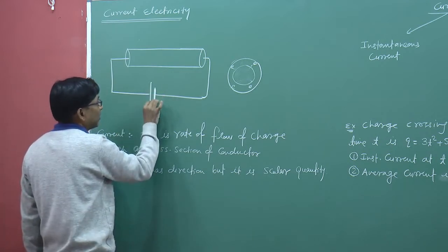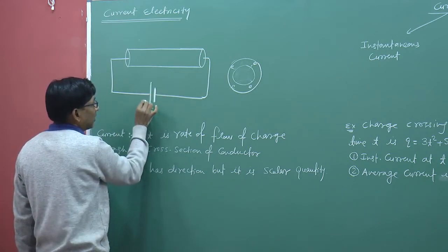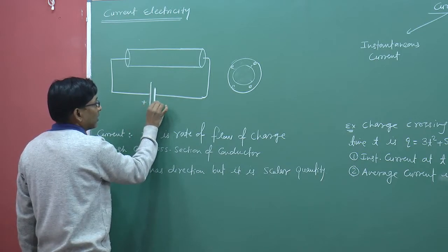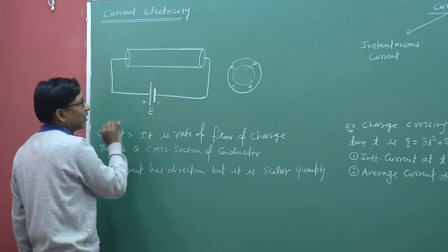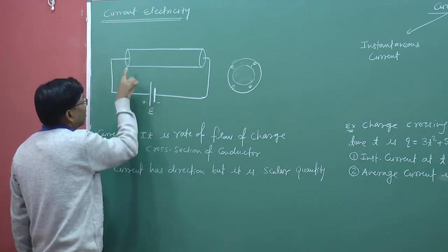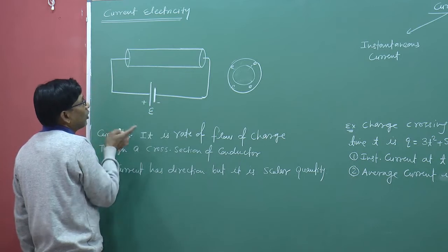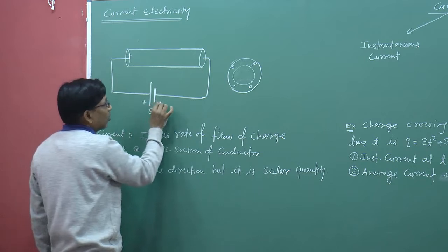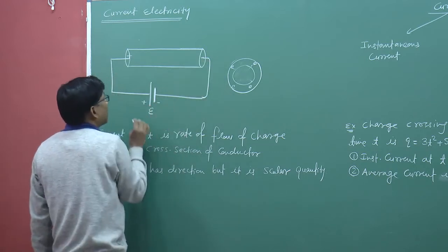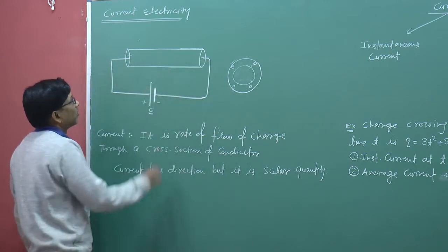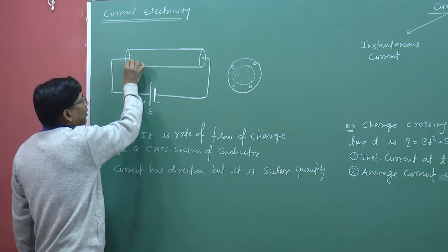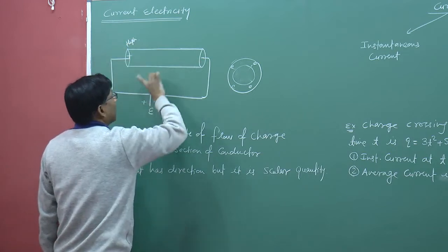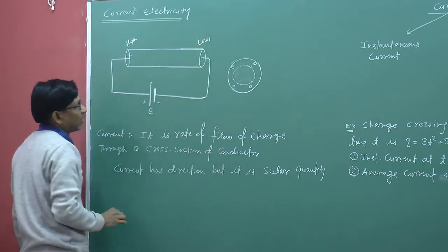We will create a potential difference. For example, here is a big plate at higher potential, and here is a small plate at lower potential — this is the negative plate. So this end has high potential and this end has low potential — both high and equal on their respective sides. We can understand that the conductor has one end at high potential and the other end at low potential.